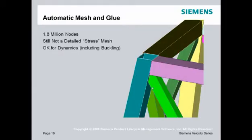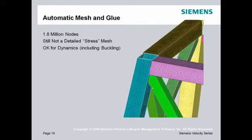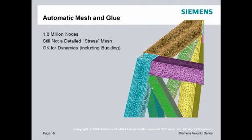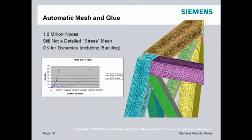You could certainly tet mesh this entire structure and use glued contact in NX NASTRAN, but the model would be quite large — 1.8 million nodes. In a linear static situation with the newer iterative solvers, you could run that in reasonable time. However, as you go deeper into analysis like nonlinear buckling or transient dynamic solutions, solve times become basically prohibitive, especially when making design changes.